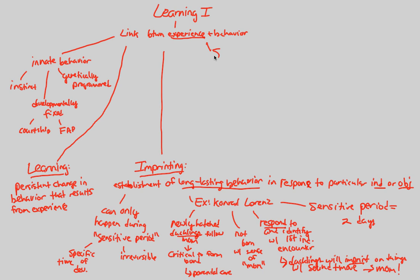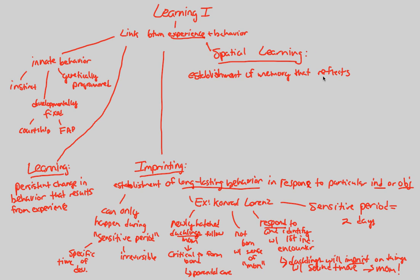Finally, in learning one, we'll go over spatial learning — one last way to understand learning. Spatial learning can be defined as the establishment of memory that reflects an environment's spatial structure. Spatial learning is the establishment of a memory that reflects an environment's spatial structure. This type of learning will act on variation. The best way to understand it is to look at the work of important animal behaviorist and ecologist Nico Tinbergen, and his digger wasps.